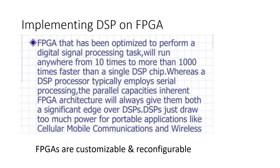Now, implementing DSP on FPGA — why do we need DSP on FPGA? FPGAs are optimized to perform DSP much faster than a DSP chip — ten to a thousand times faster than a DSP chip. That is why we go for FPGA with DSP. Not only that, FPGAs are also customizable and reconfigurable.